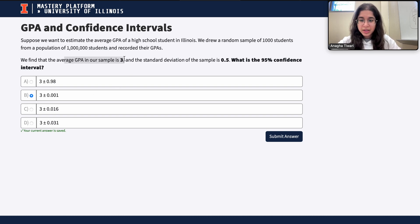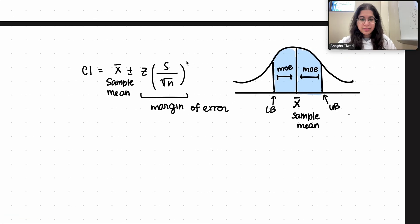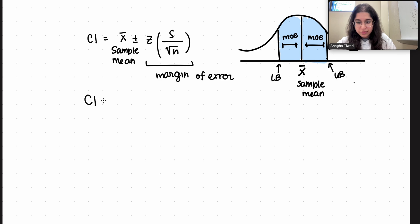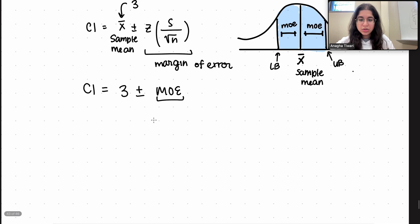Here we have the average GPA is 3, which means the sample mean is 3. The standard deviation is 0.5 and we want a 95% confidence interval. So I have the formula written out for us. Our confidence interval - we know our sample mean was 3 from the question, so 3 plus or minus basically that margin of error. So this is what we need to solve for.